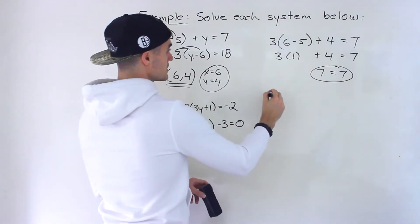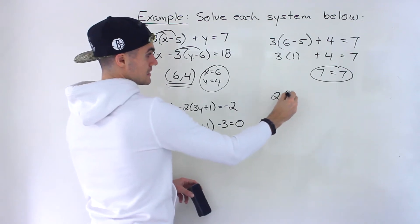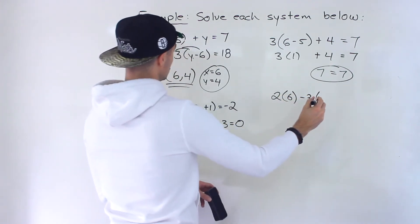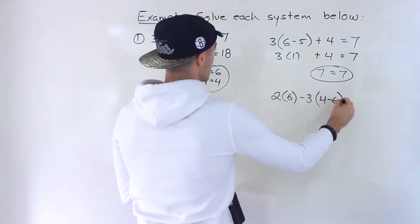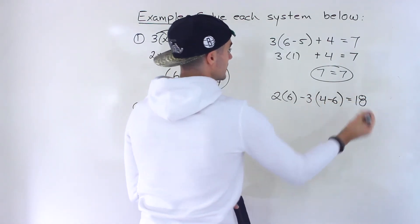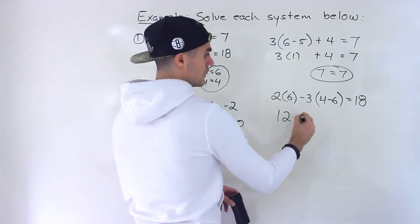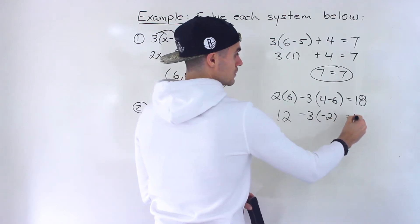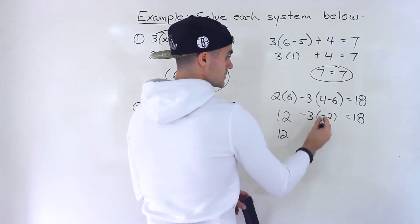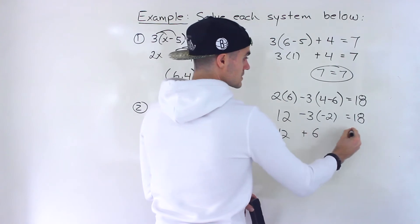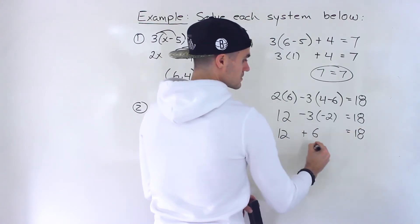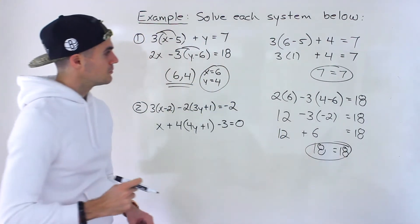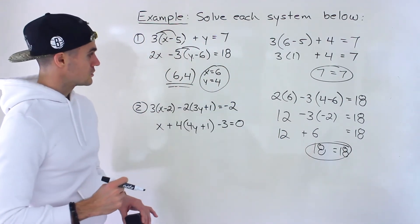Now let's try the second original equation. We'll have 2 times 6 minus 3 times (4 minus 6), and that should equal 18. 2 times 6 is 12. The bracket gives negative 2. Negative 3 times negative 2 gives positive 6. So 12 plus 6 equals 18 — left side equals right side. We can be pretty confident those are the correct solutions.